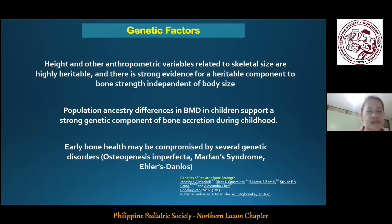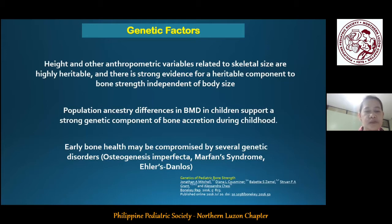Genetic factors play a significant role in determining bone mass. It has been known for many years that height and other anthropometric variables related to skeletal size are highly heritable. Population ancestry differences in bone mineral density in children also support a strong genetic component of bone accretion during childhood. Studies have shown that bone mineral density is greatest for African Americans, and Caucasians have greater values than Asians. Early bone health may also be compromised by several genetic disorders.